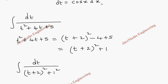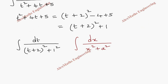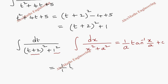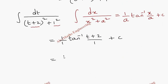This is of the form integral dx by x square plus a square. So the formula is 1 by a tan inverse x by a plus c. Instead of x, we have t plus 2, and for a, we have 1. So this will become 1 by 1, tan inverse, we have to write t plus 2 by 1 plus c. And we have to replace the value of t which is sin x. So the answer is tan inverse sin x plus 2 plus c.